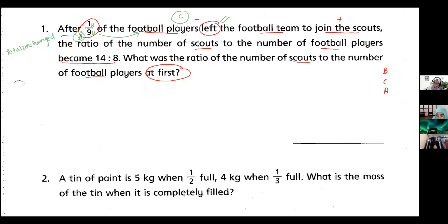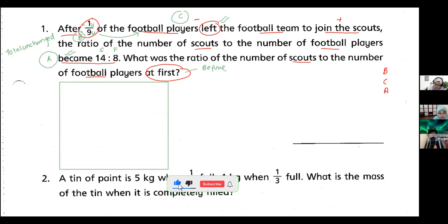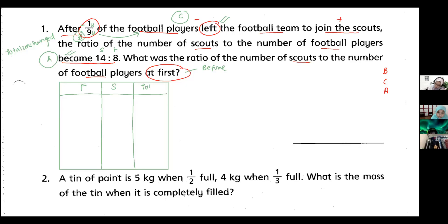We have football players and scouts. Before, change, and after — 'became' tells me this is my after. I draw my box. The 'at first' tells me this is the before. So we cut it into three columns: football players, scouts, total — and rows B, C, A.